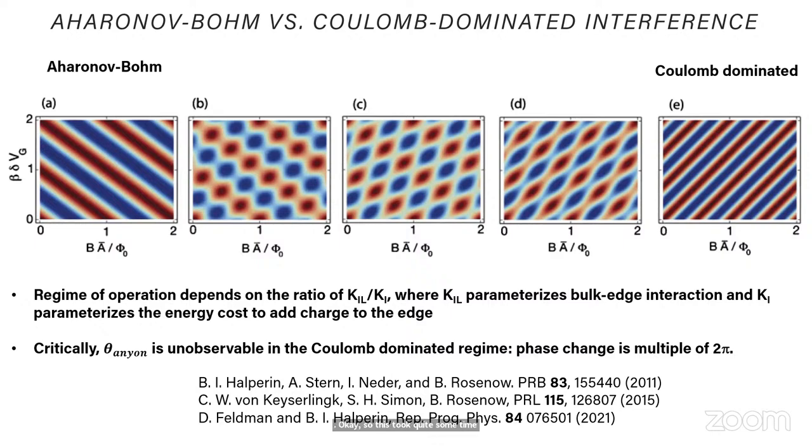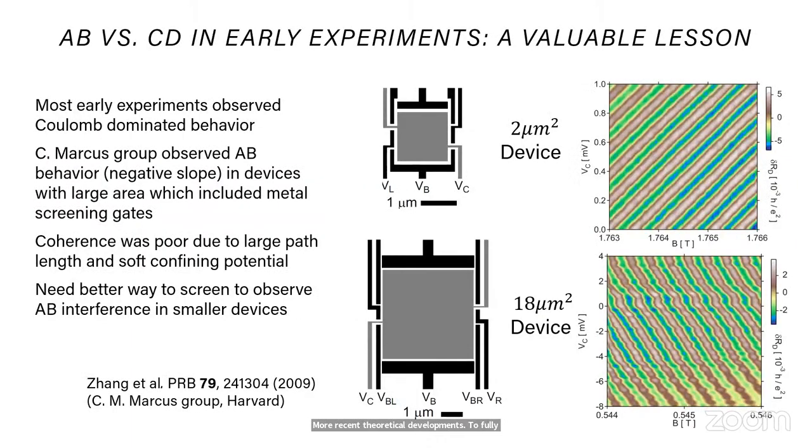And critically, for the early experiments, theta anion is unobservable in the Coulomb-dominated regime. You get a phase change, which is a multiple of 2 pi. So this took quite some time, more recent theoretical developments, to fully understand this. And I want to emphasize that it was driven by experimental observations as well. We weren't the first group that were thinking of trying to measure an interferometer or far from it.